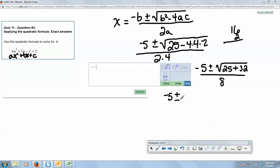Then we're going to have negative 5 plus or minus 25 plus 32. And again, you can do that addition off to the side. So we get 57 over 8. And then at that point we just ask ourselves, is 57 a perfect square?